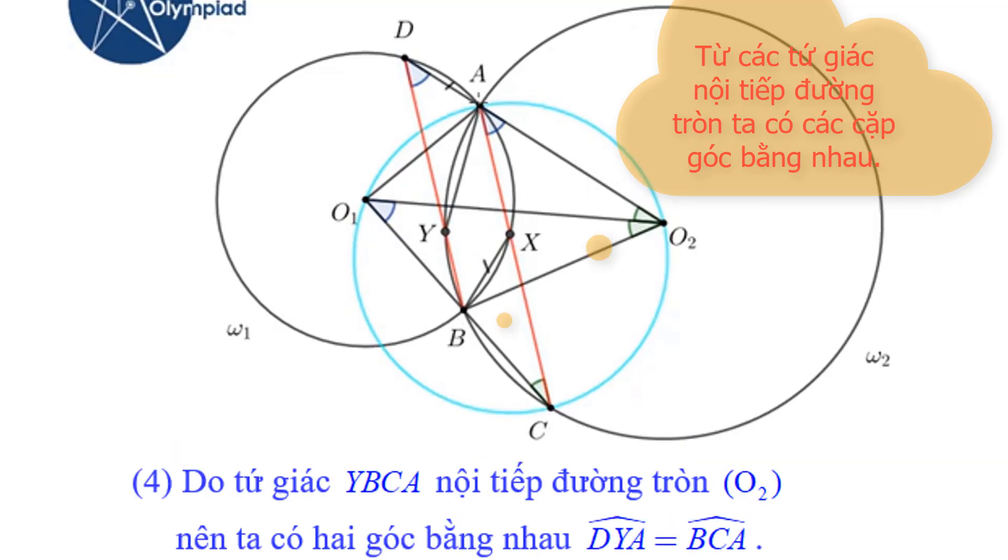Now because the quadrilateral AYBC is cyclic, we know that AYB plus BCA is 180 degrees. So this angle is equal to this angle. Let me show that in the picture.